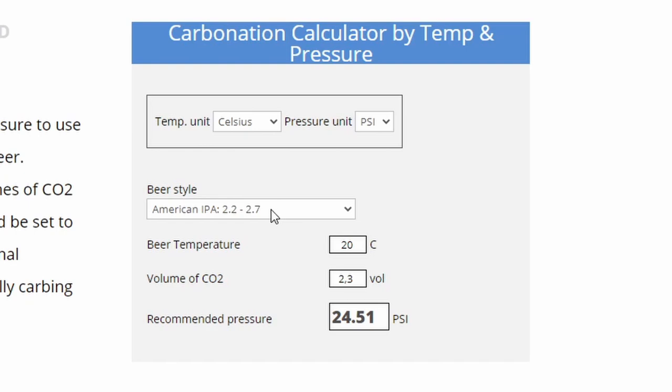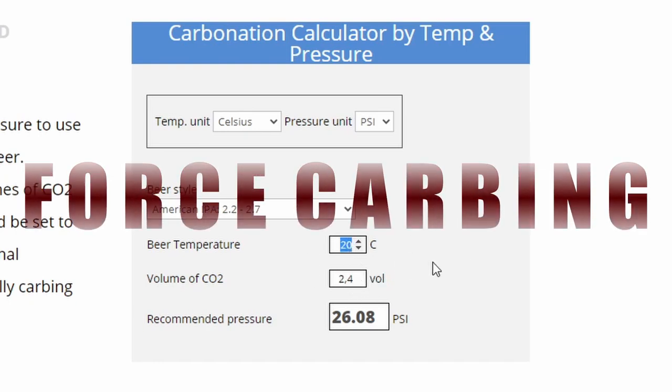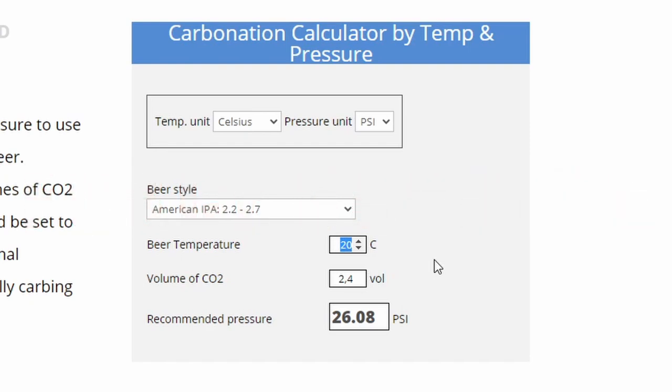So I have chosen my beer style and I went with 2.4 as suggested. And let's say I'm forced carbonating a beer. I have a keg in my keezer and I have let's say 8°C in there and I want 2.4 volumes of CO2. Then I would have to set my regulator to 14 PSI or 1 bar.